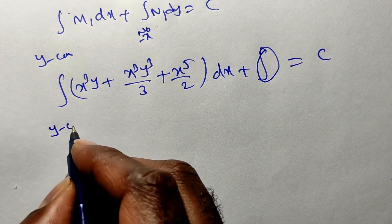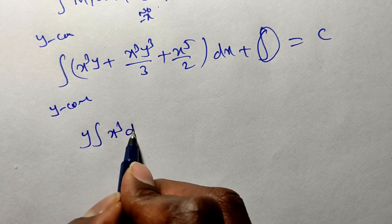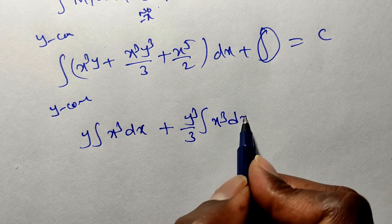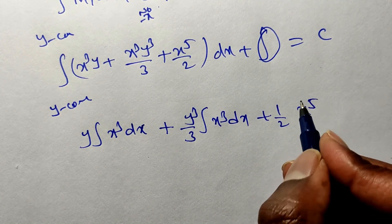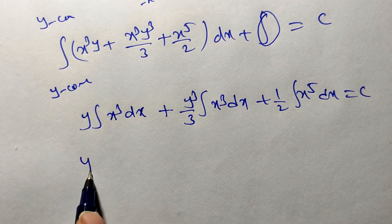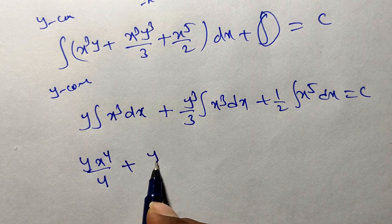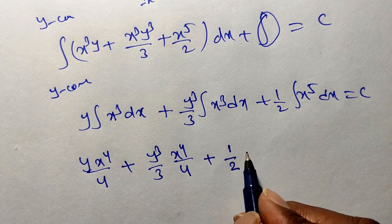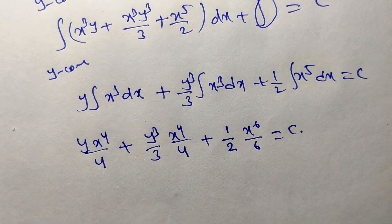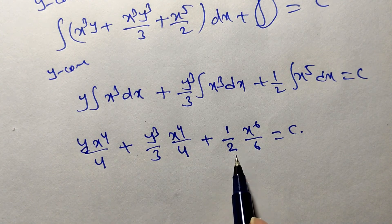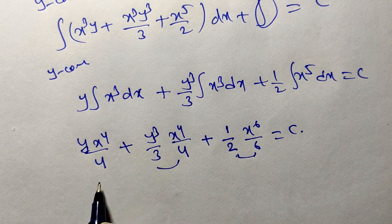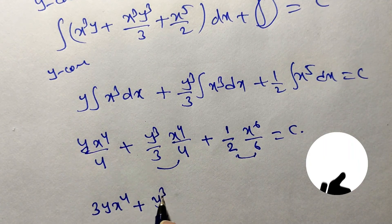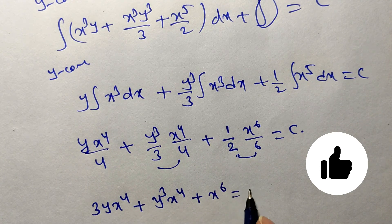Integrating M₁ with y as constant: y·(x⁴/4) + (y³/3)·(x⁴/4) + (1/2)·(x⁶/6) = c. This simplifies to y·x⁴/4 + y³x⁴/12 + x⁶/12 = c. Taking LCM as 12 and moving to the left side: 3yx⁴ + y³x⁴ + x⁶ = 12c. Writing 12c as C₁ (an arbitrary constant), the general solution is 3yx⁴ + y³x⁴ + x⁶ = C₁.